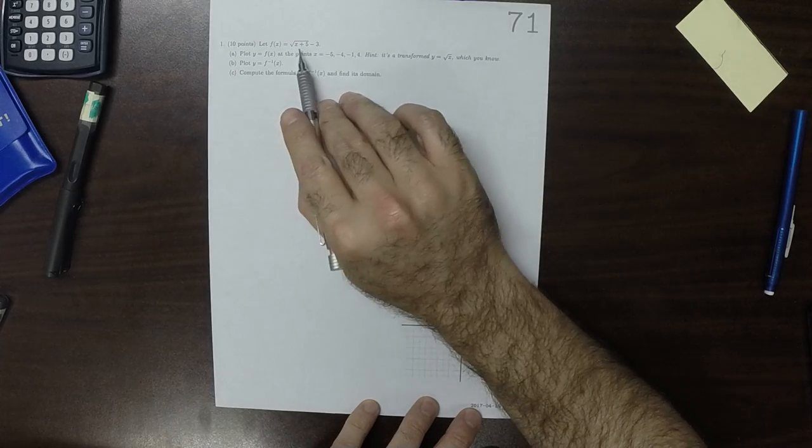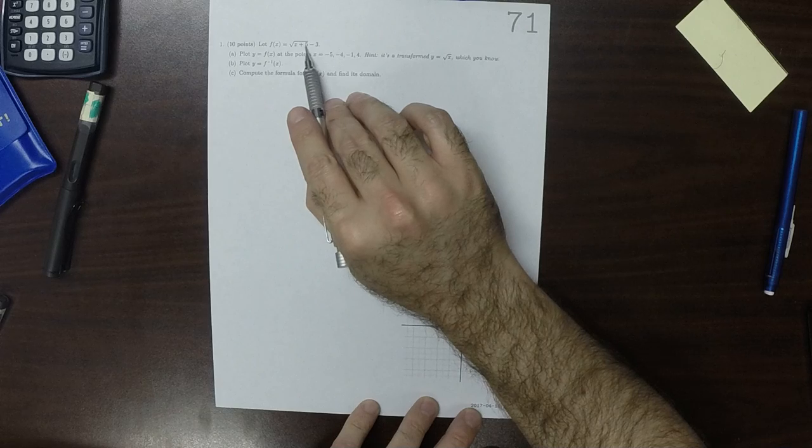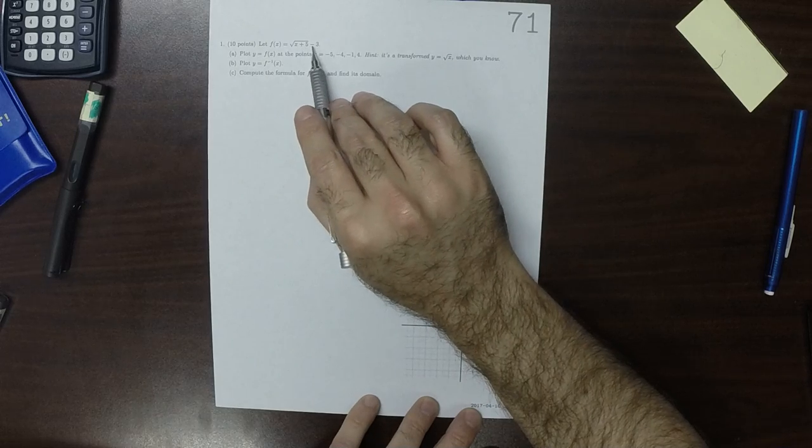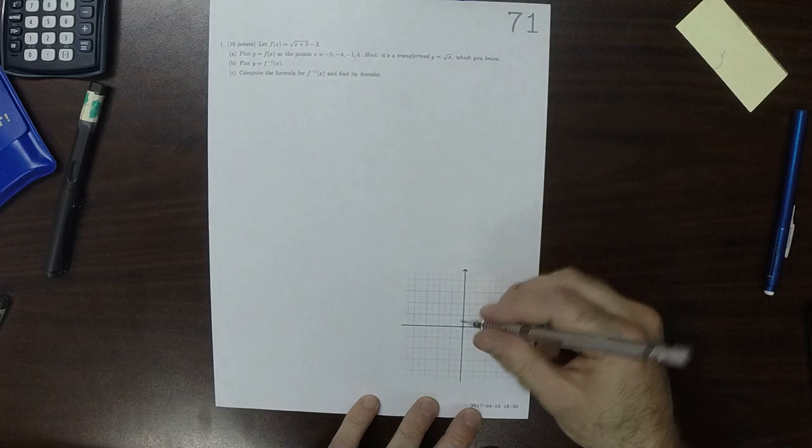So if you plug in negative 5, that's negative 5 plus 5 is 0. Square root of 0 is 0, minus 3 is negative 3. So negative 5, negative 3.